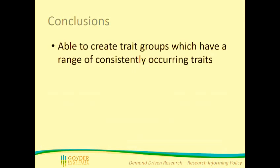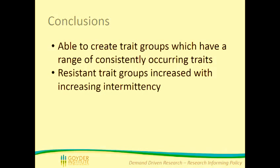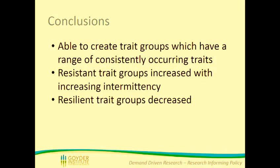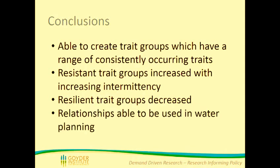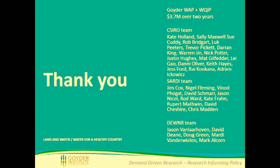In conclusion, we were able to create trait groups with a range of consistently occurring traits that can be used in other areas across the state, because taxonomic classifications don't need to exactly match — for example, Kangaroo Island might have slightly different taxa but they still fall within these trait groups. We found that resistant trait groups increased with increasing flow intermittency, and resilient trait groups generally decreased — and those are the taxa we would hope to see respond and improve with management actions such as low-flow bypasses or threshold flow rates. These relationships can then be used in water planning, and thank you very much to all my co-collaborators and for the funding through the water planning project.